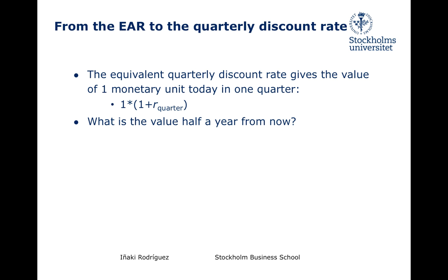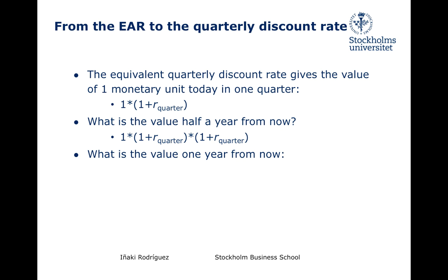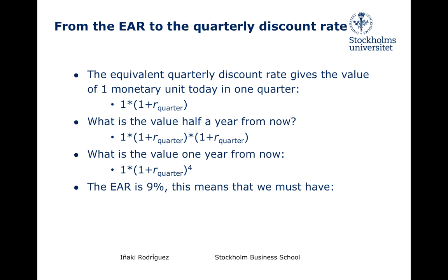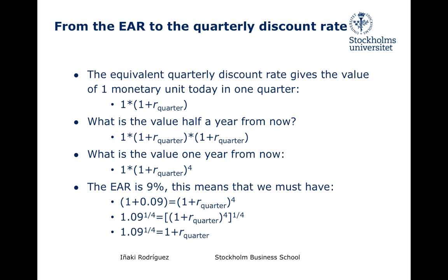What would be the value of such monetary units six months from now — that is, two three-month periods away? We replicate the same arguments and obtain the answer by doing this simple operation. Similarly, the value of one monetary unit one year from now is obtained by computing this value. Now, obviously, this value must be equal to the one we obtain by using the Effective Annual Rate. In other words, this equality must hold. To obtain the equivalent quarterly discount rate, all we have to do is factor out its value by raising both sides of the equality to the power of 1/4, which gives us that R_quarter is equal to 0.0218, or equivalently 2.18%.